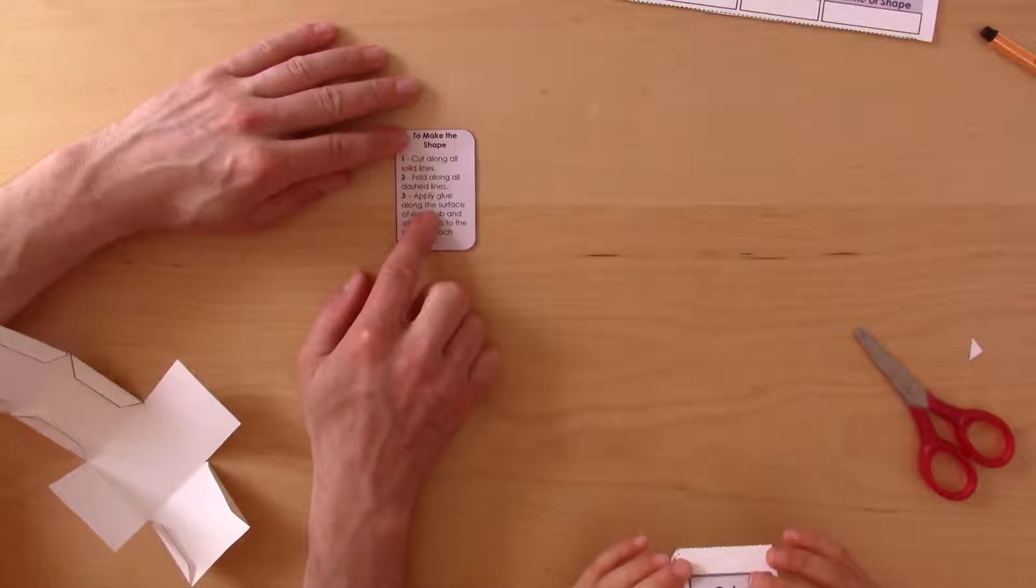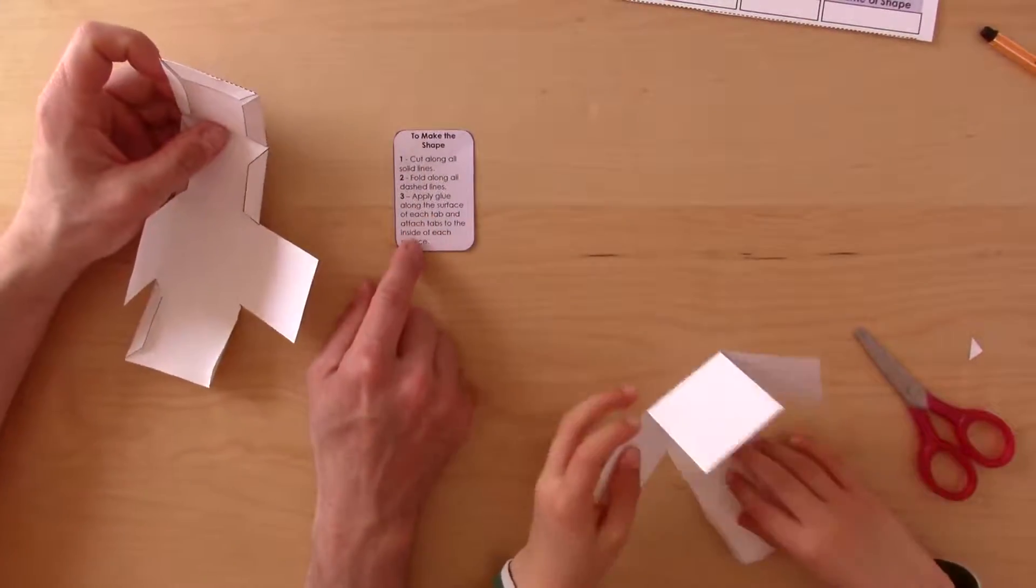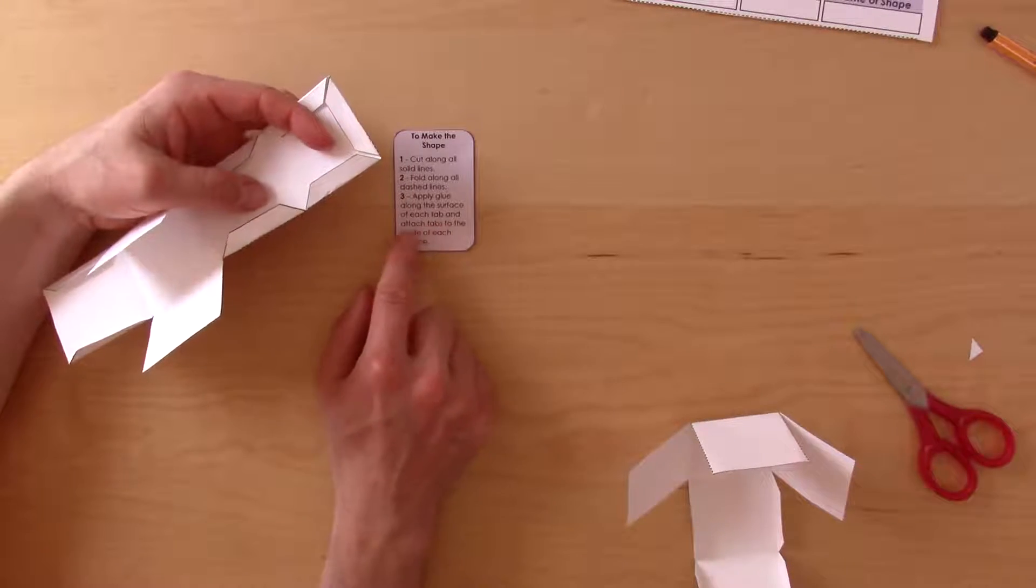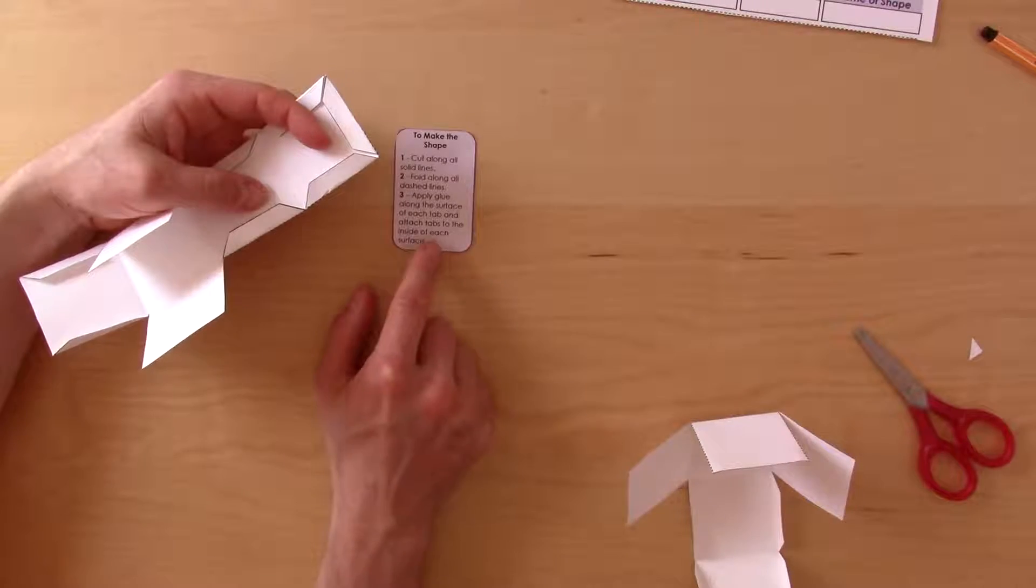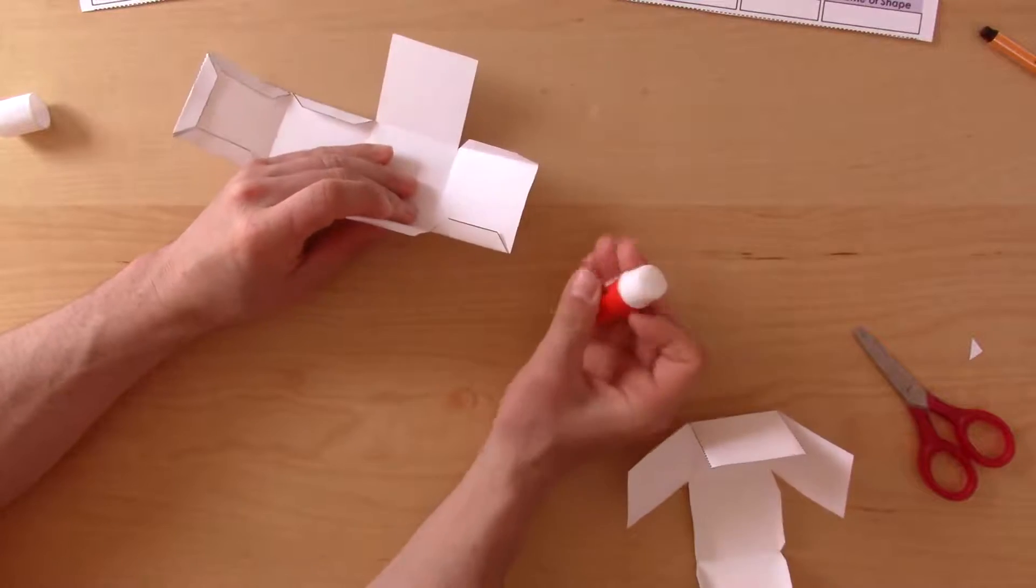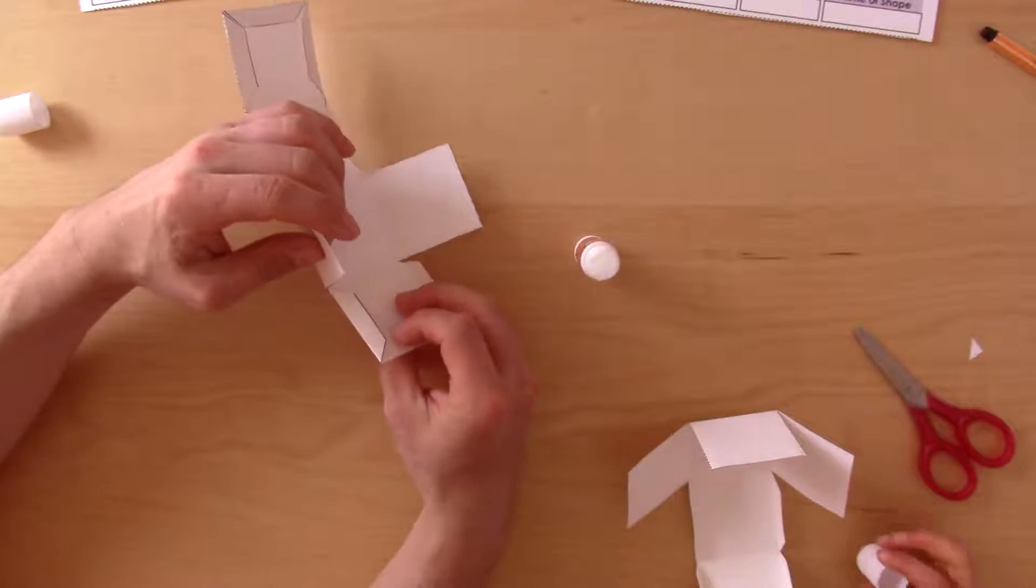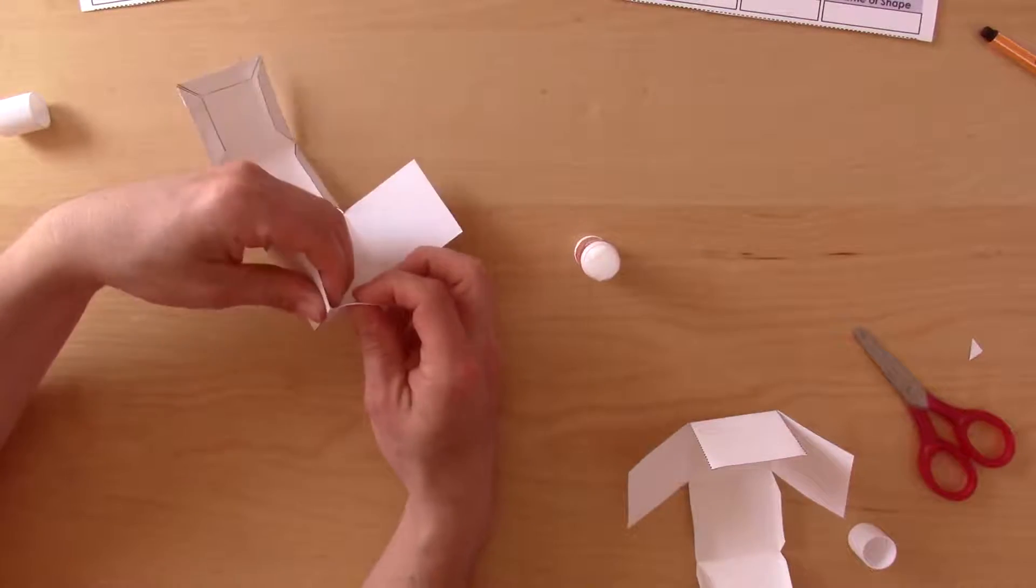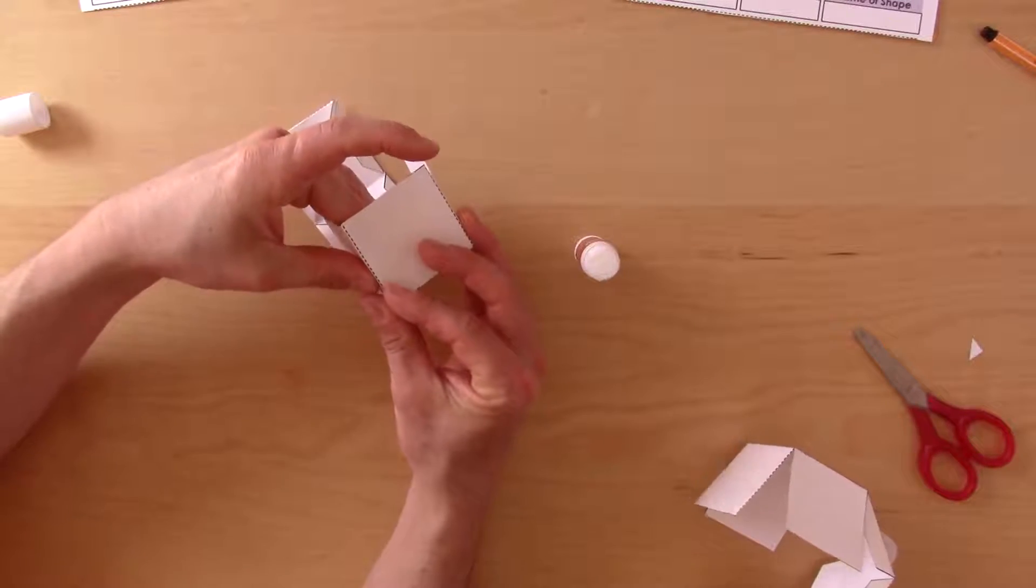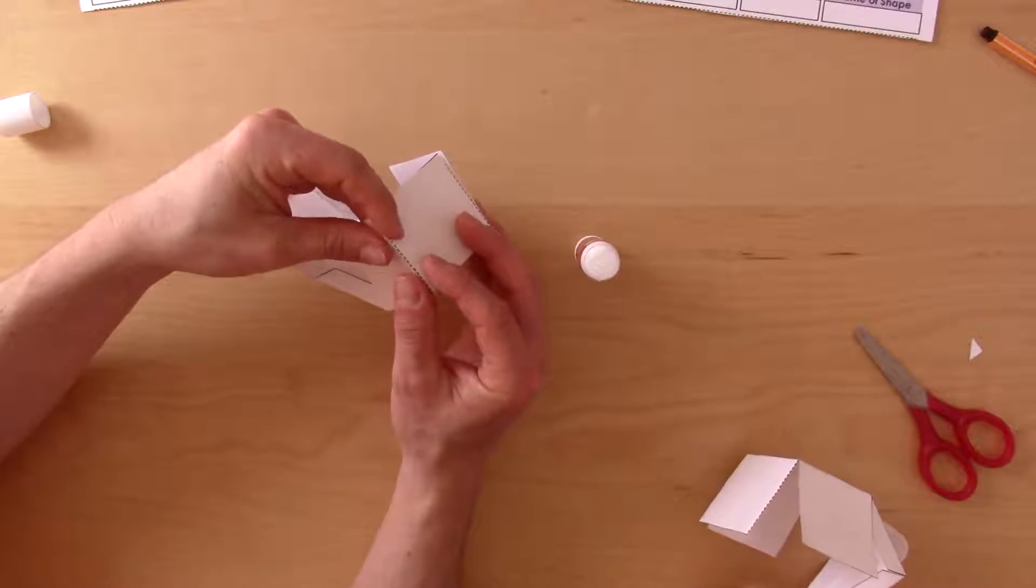Step three is apply the glue along the surface of each tab and attach tabs to the inside of each surface. I'm going to start with the end here. You run a nice amount of glue and you pinch the tab to the inside of the surface and you just hold it down for a couple of seconds.